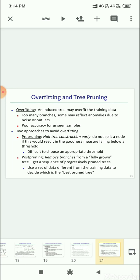Another is post-pruning, which means remove branches from a fully grown tree. Get a sequence of progressively pruned trees. This uses a set of data different from the training data to decide which is the best pruned tree.